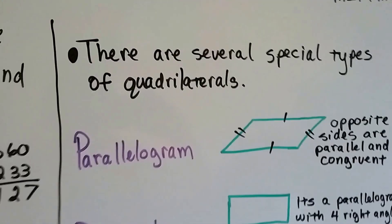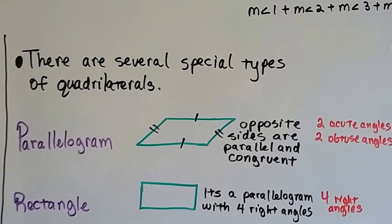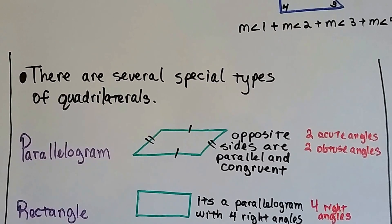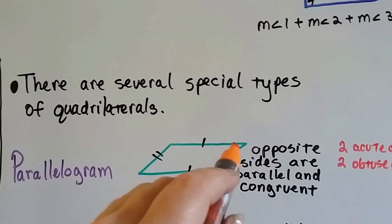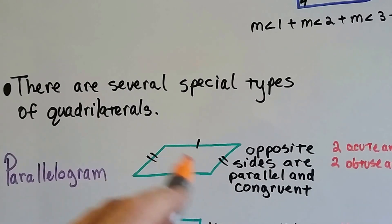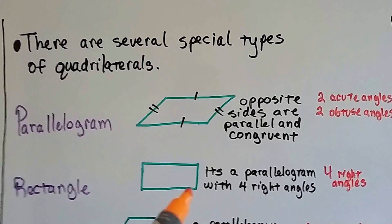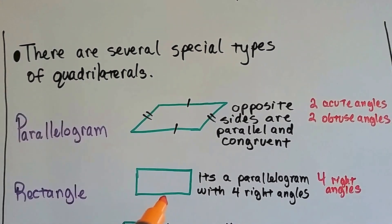Well, there's several special types of quadrilaterals. A parallelogram has opposite sides that are parallel and congruent. It's got two acute angles and two obtuse angles. See the two acute angles on opposite sides here? And the two obtuse ones are here. A rectangle is a parallelogram with four right angles. Same thing as this, except the angles are right angles.